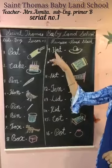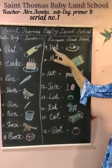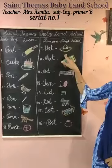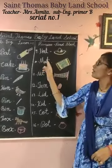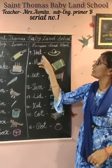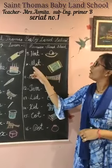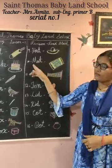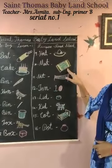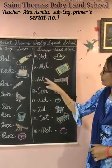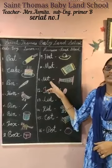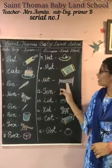The next one is hat. H, A, T — hat. H, A, T — hat. Mat. M, A, T — mat. Net. N, E, T — net.